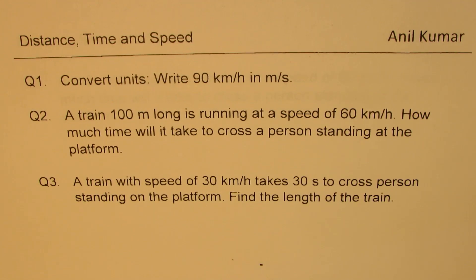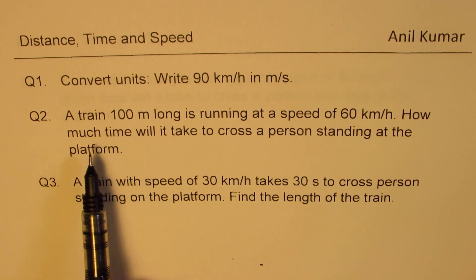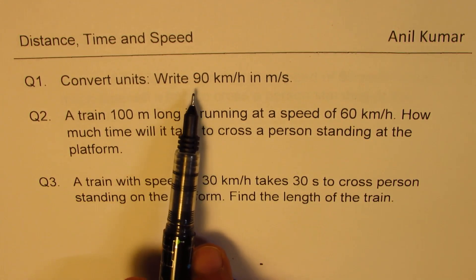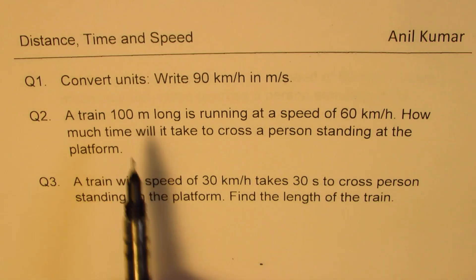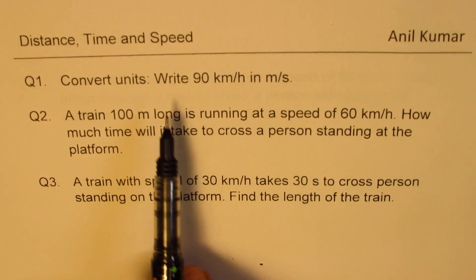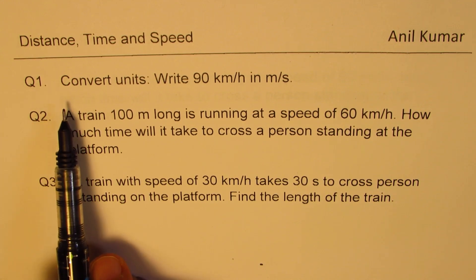I'm Anil Kumar, welcome to my series on distance, time and speed. In this video we have three examples all relating to the speed of a train and the distance covered by it. Most of the time when you have such situations, the speed is given in kilometers per hour and the time to be found is in seconds or minutes, so we need to understand how to convert the units.